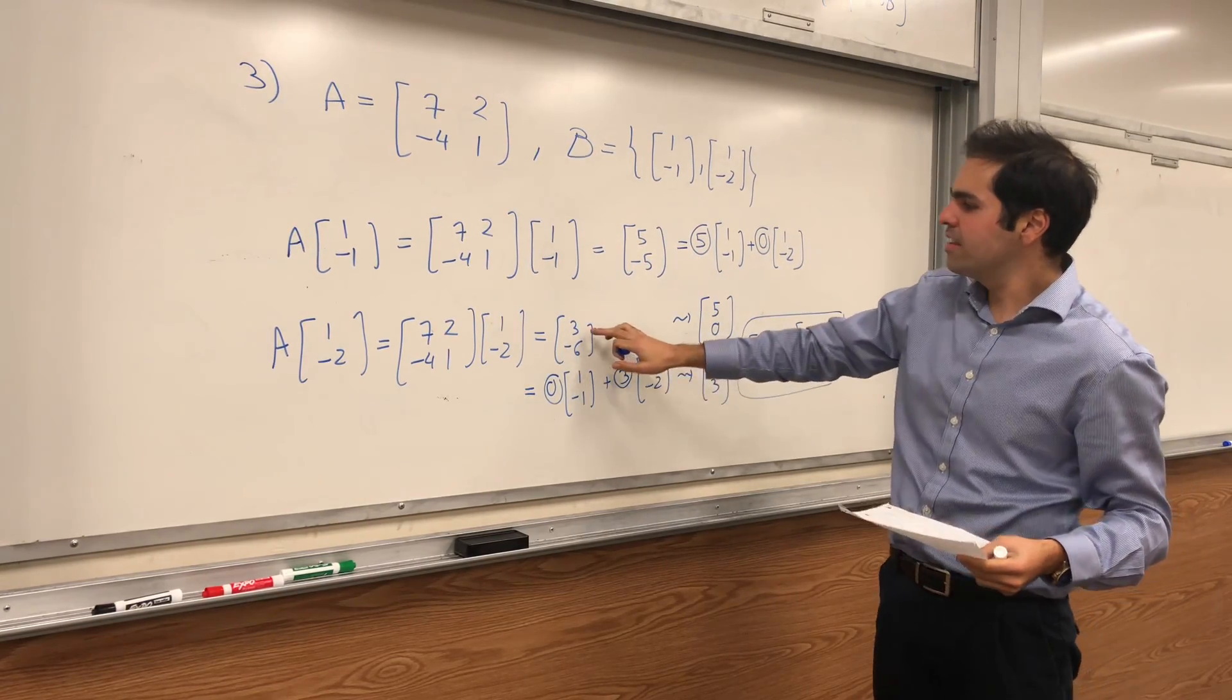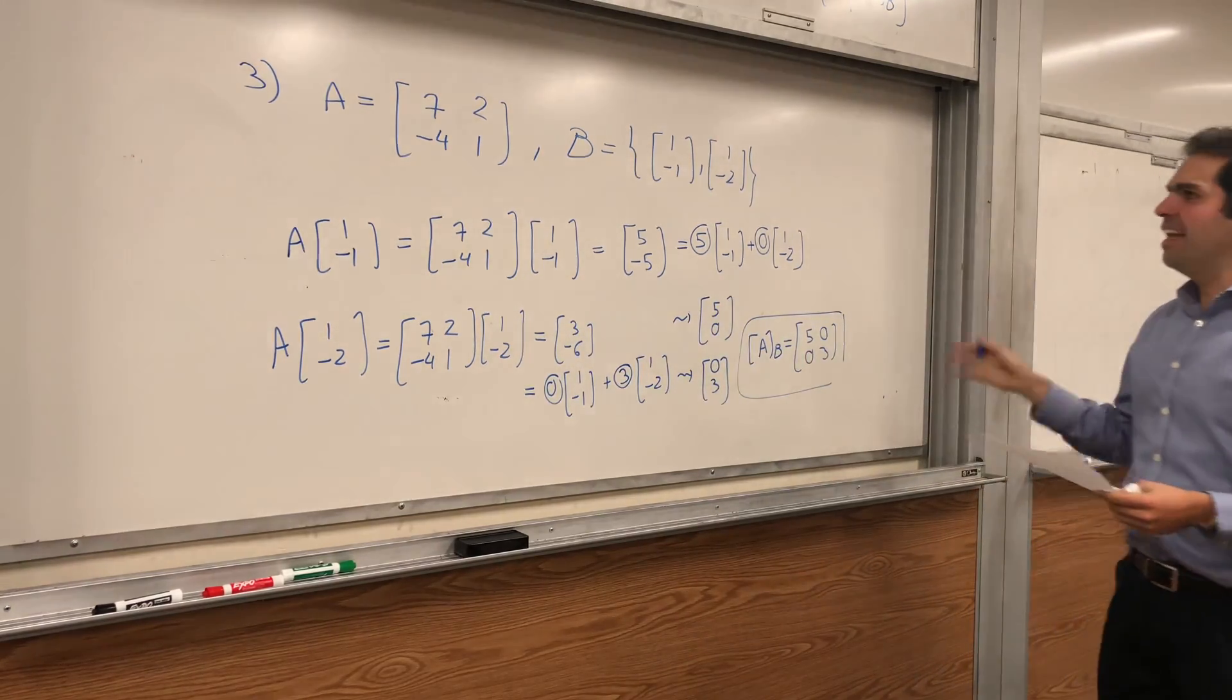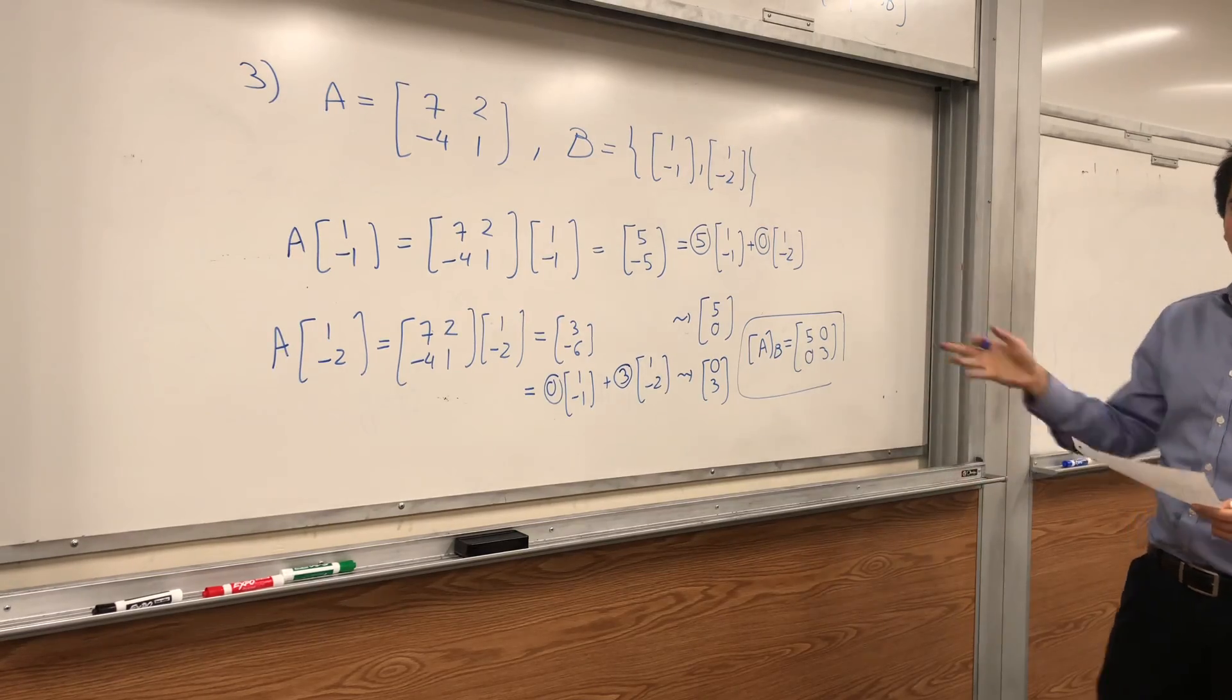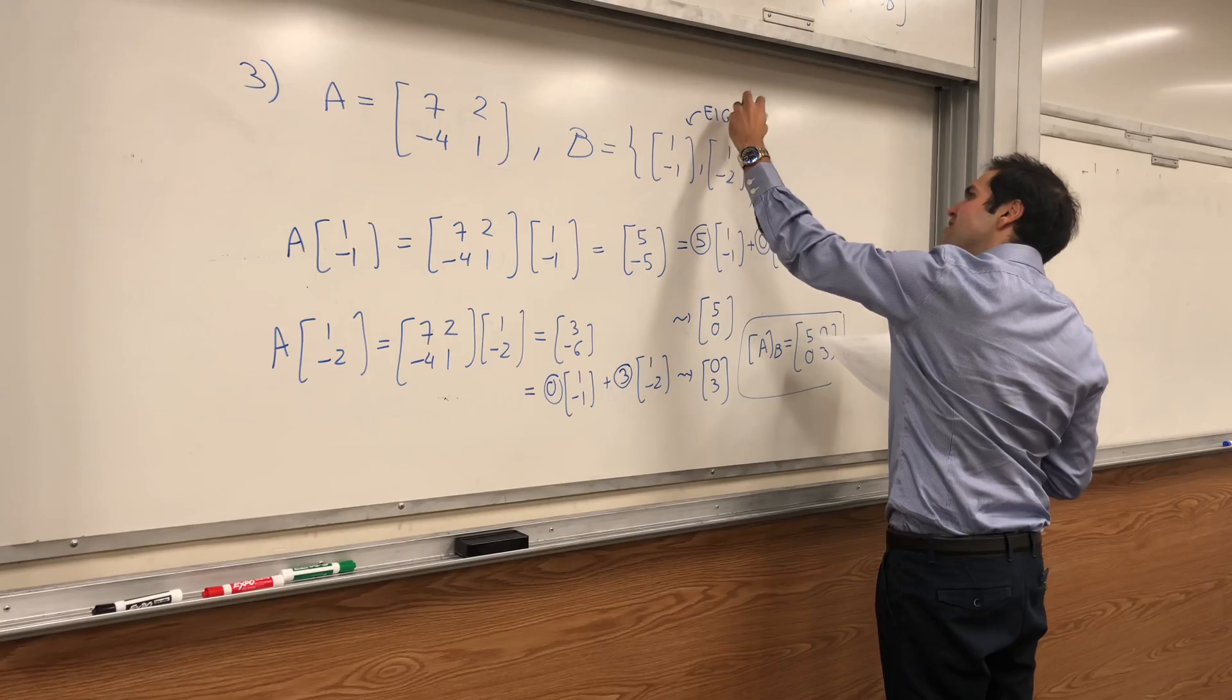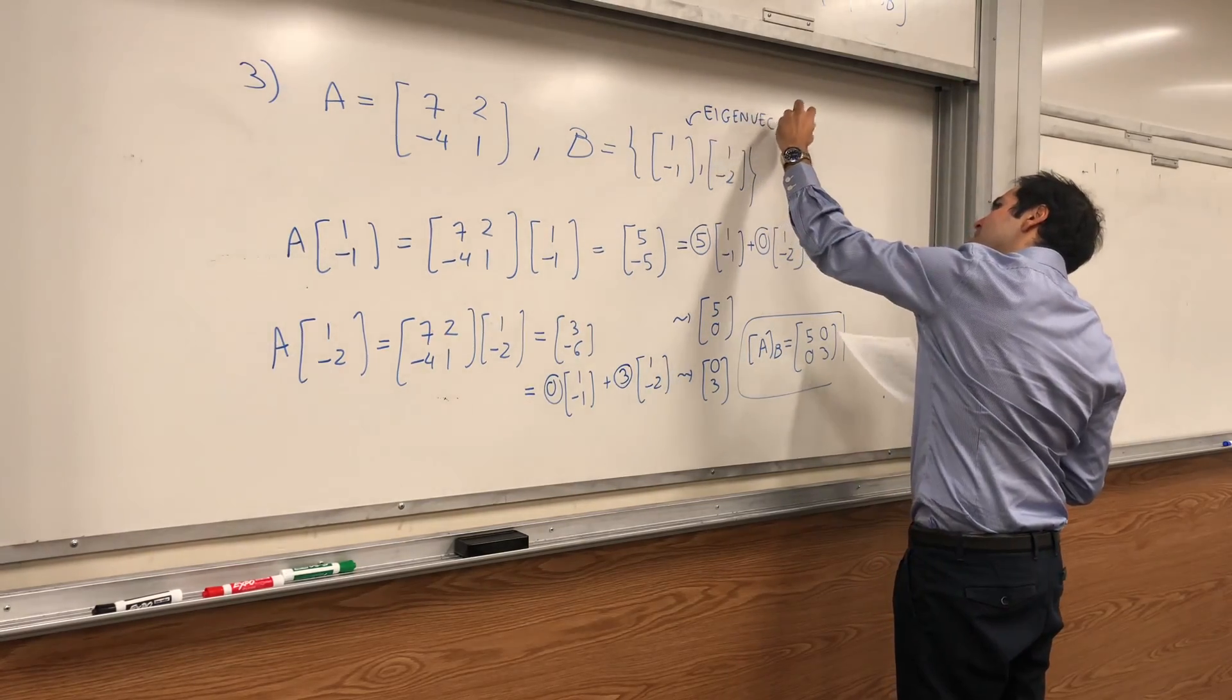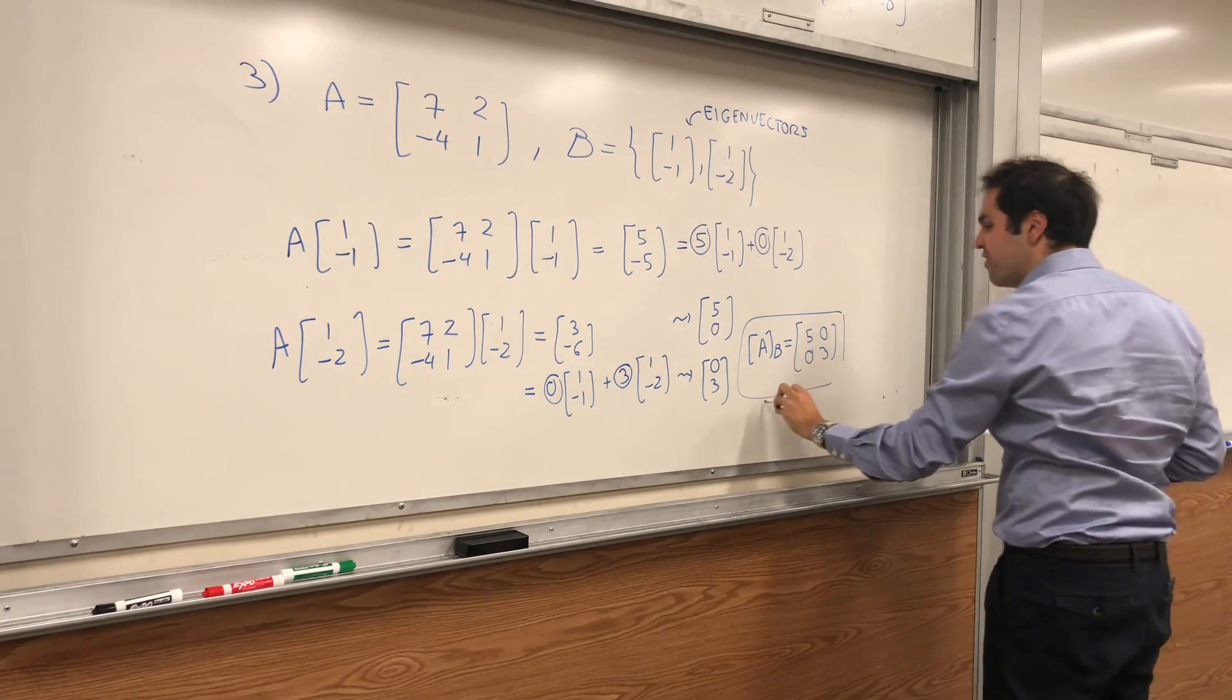So you see what made this work is that we had eigenvectors. So this is an eigenvector with eigenvalue 5, this is an eigenvector with eigenvalue 3. And the point is, if B consists of eigenvectors of A, so if B is a basis of eigenvectors, then in fact the B-matrix of A is diagonal.